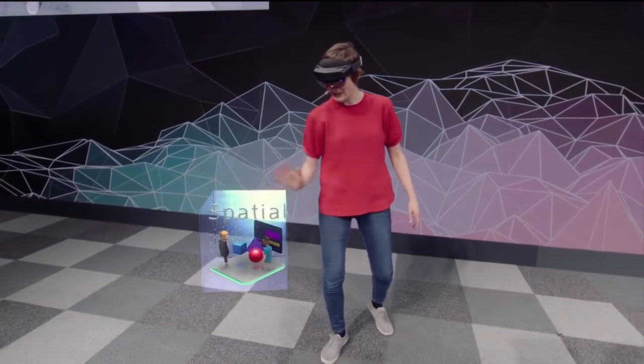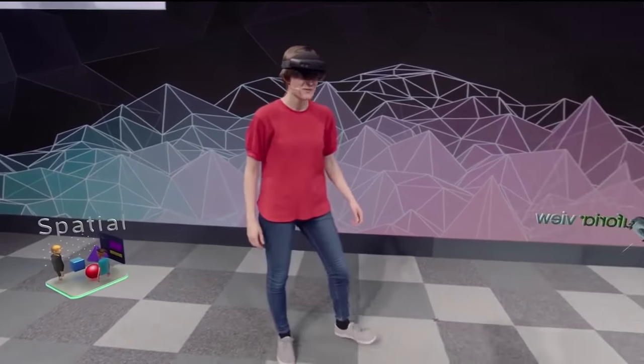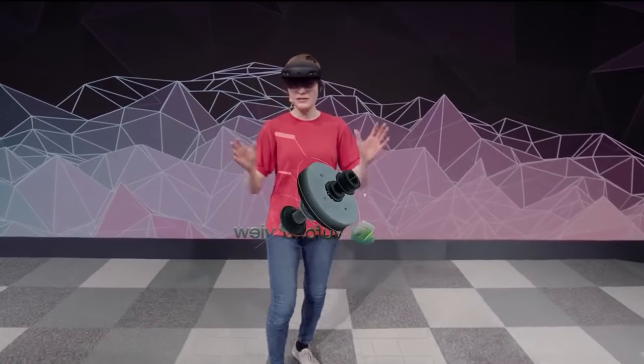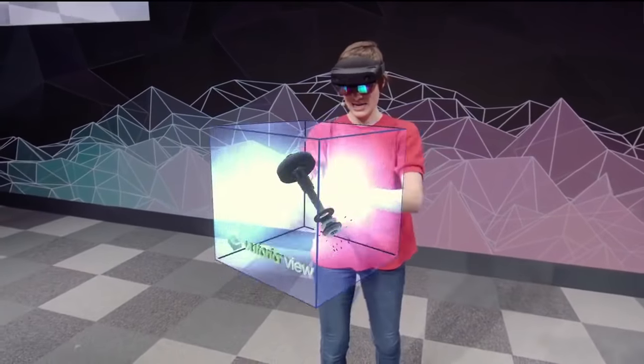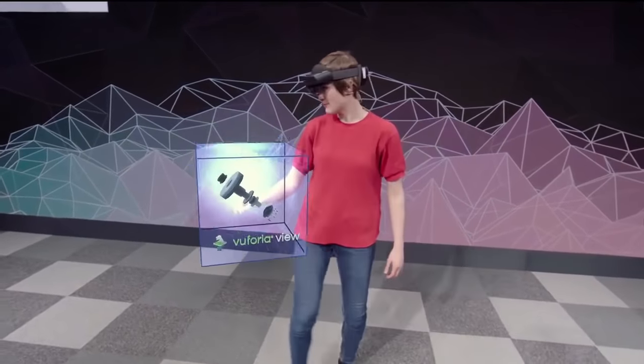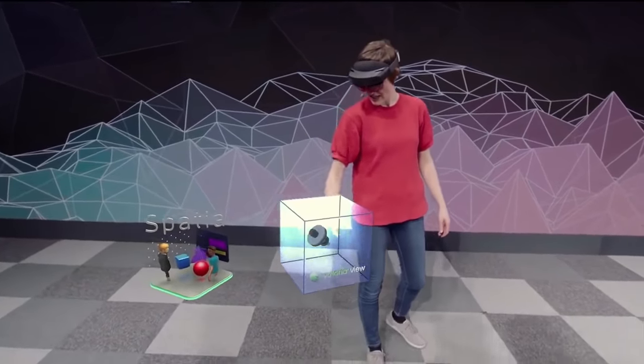This is an app I've got called Spatial. Let me just put it right there. I've got another app here called Vuforia View. Now, it's a little big, so let me just use two hands here to make it smaller, and then rotate it so you can see. There we go. And then let me put it down here in the space. Maybe make it a bit smaller. That's nice.